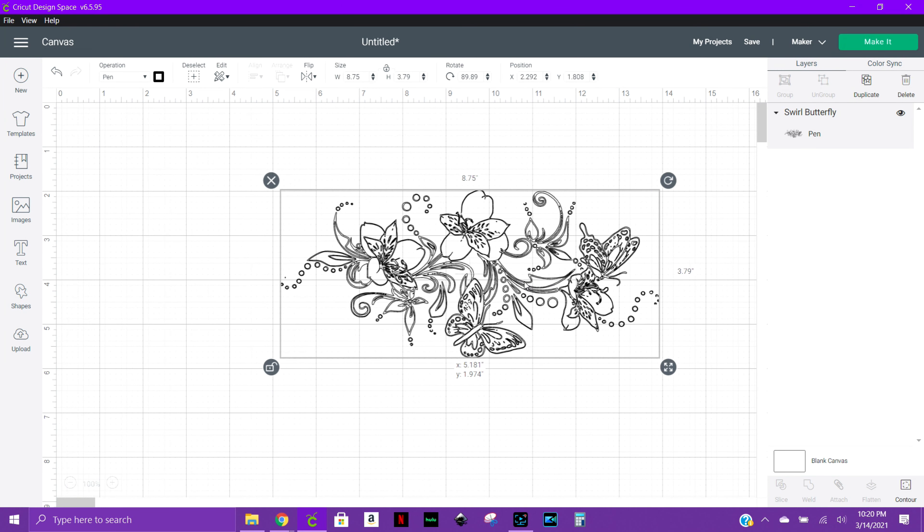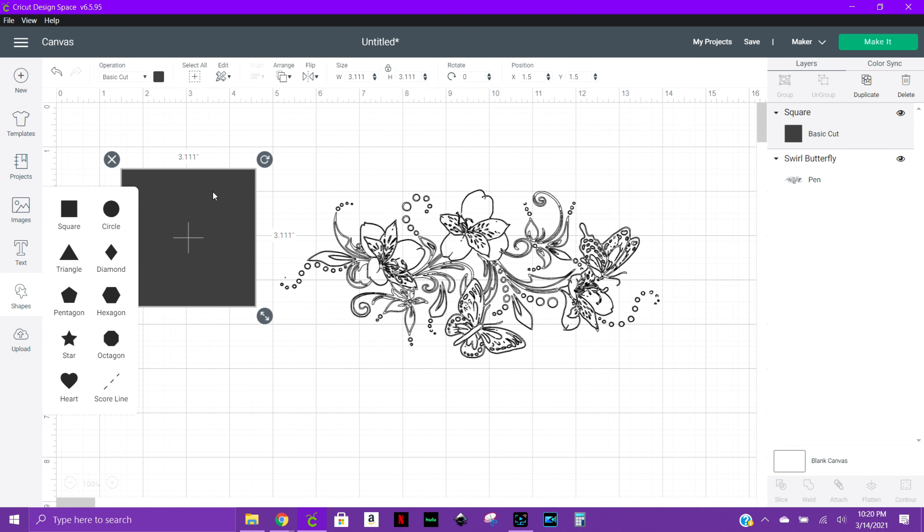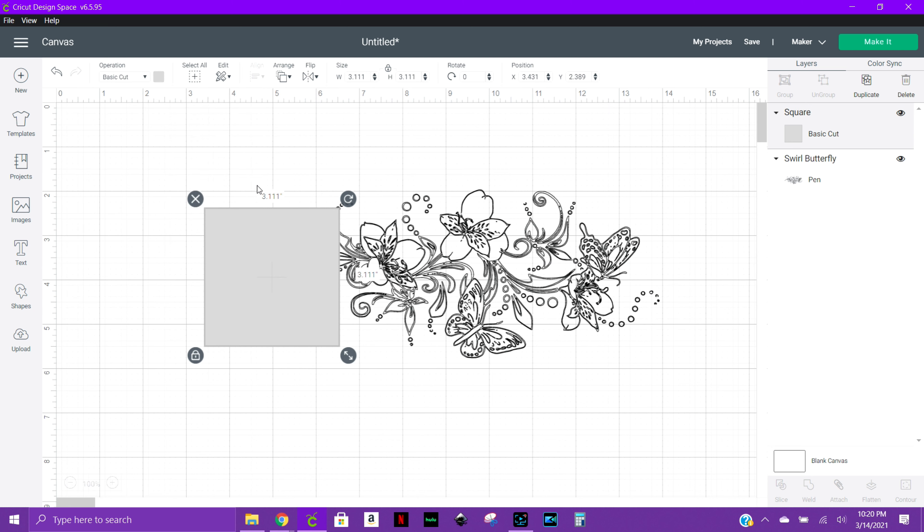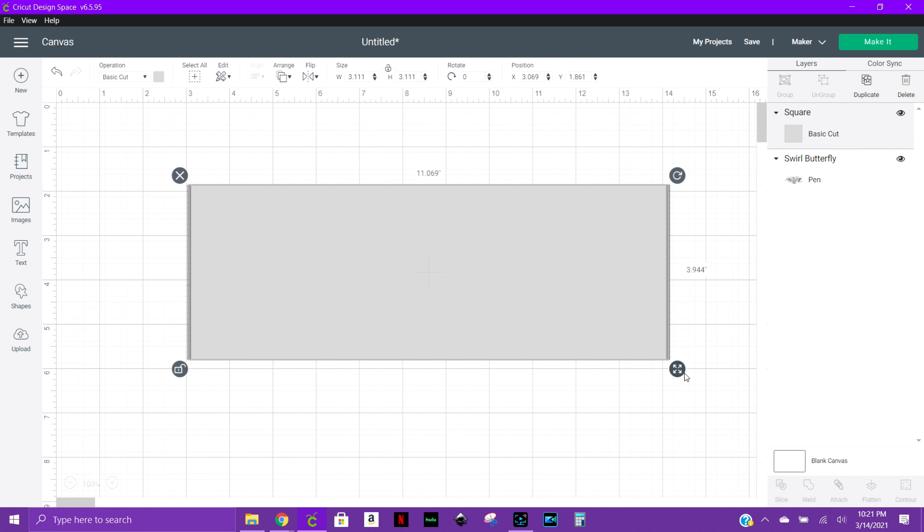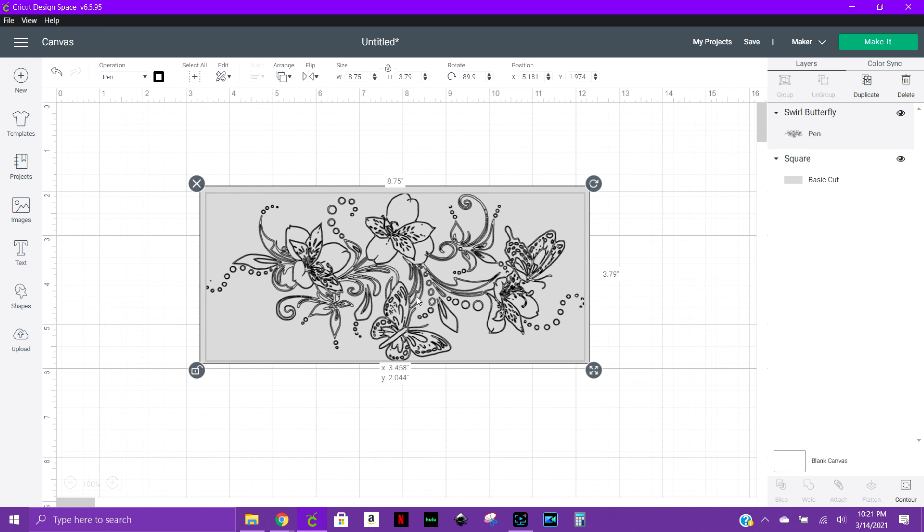Now I want to go ahead and insert a shape here, and we're going to use this box for our background. I do want to change the color so I can kind of see what I'm working with. We are going to change the shape of the box, and I want this to be slightly bigger than what we are actually working with with the image itself. So we're just going to do a 9 by 4 on that. I'm going to move this box to the back, place our image here, and I always like to center, so I want to make sure I have enough room on all sides.